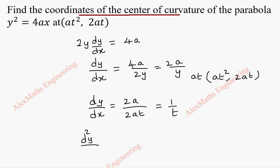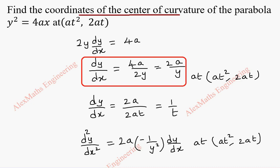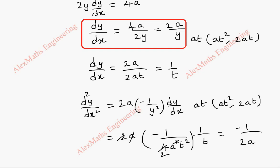Now for the second differentiation, d²y/dx², we have to find from the expression 2a by y. So 2a is a constant, and 1 by y differentiates to minus 1 by y squared, multiplied by dy/dx. At the point (at², 2at), this becomes 2a into minus 1 by y squared, which is 4a²t², and dy/dx is 1 by t. After cancelling, we are left with minus 1 by 2at³.